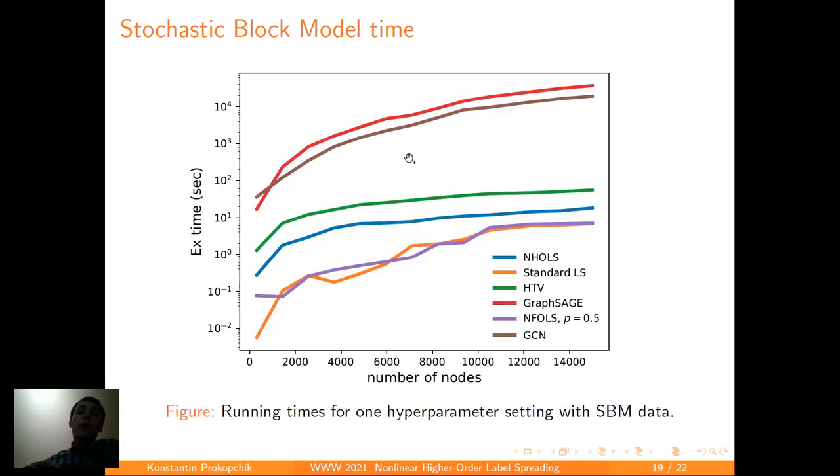As I mentioned before, our algorithm scales linearly. And you can see that with the increase of the number of nodes in a graph, the execution time does not grow very fast. It actually becomes almost linear near the highest values. Unlike the neural network methods here. But we also can notice that it is still slower than the regular label-spreading method because of course we use high order information.